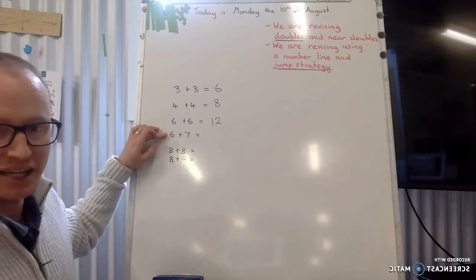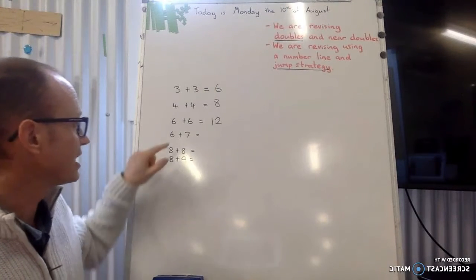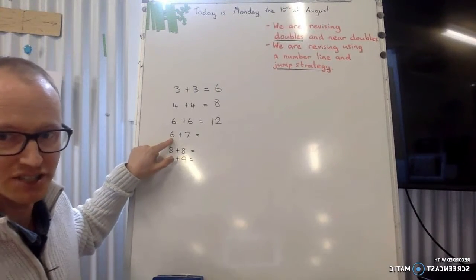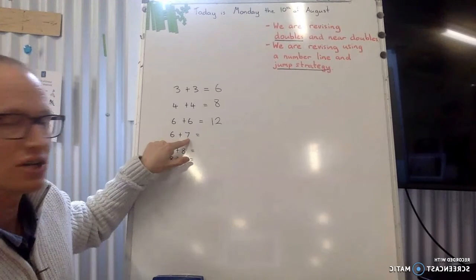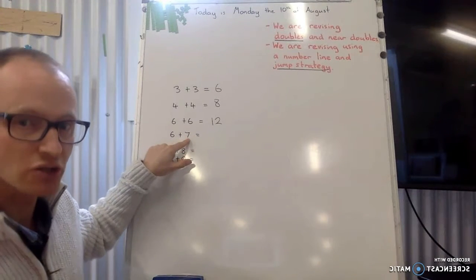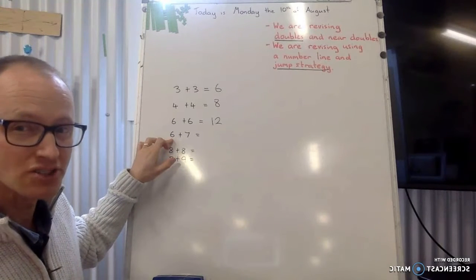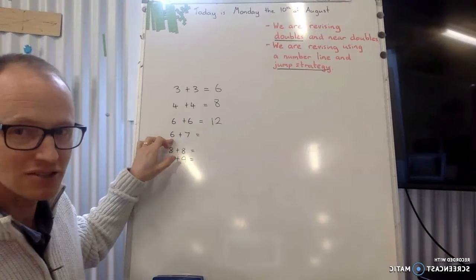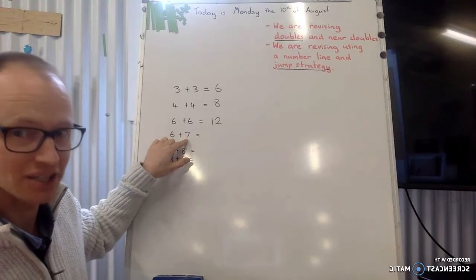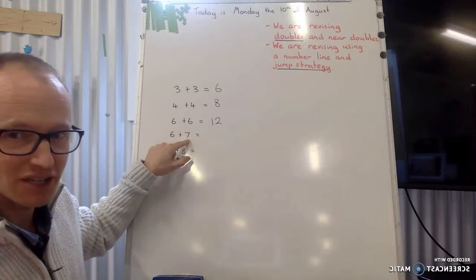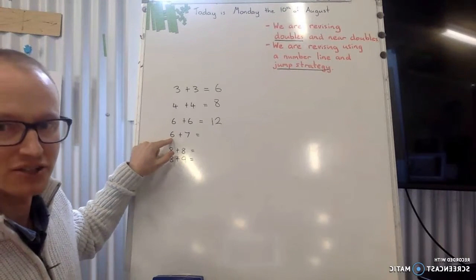This next one is a near double. Now 6 plus 7 is a near double to 2 things. It could be a near double to 6 plus 6. 6 plus 6 is 12. It could also be a near double to 7 plus 7. So as you do this one, I want you to think about which one you're going to do the near double to. It's going to be a near double to 6 plus 6 because 6 plus 6 is 12 and it's 1 bigger, so 13 is the answer. Or it could be 7 plus 7 is 14 and it's 1 less, so the answer is 13.